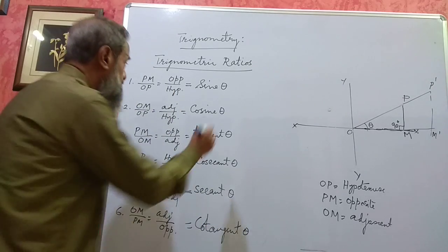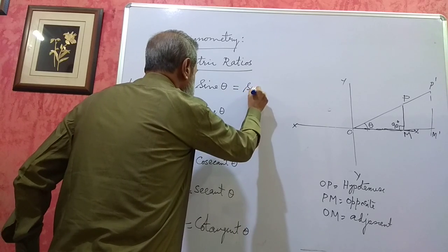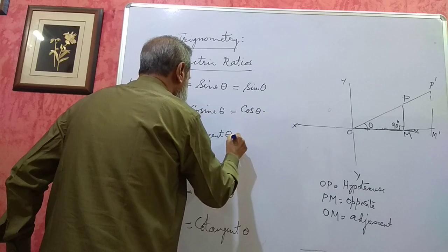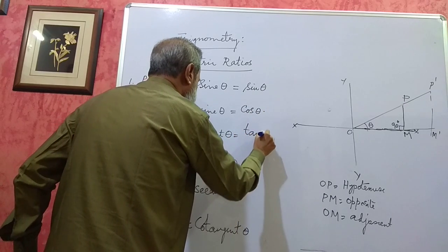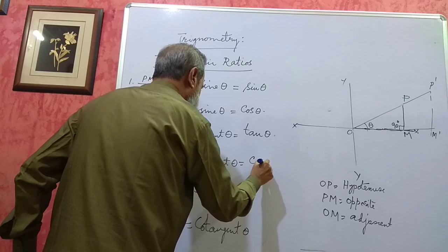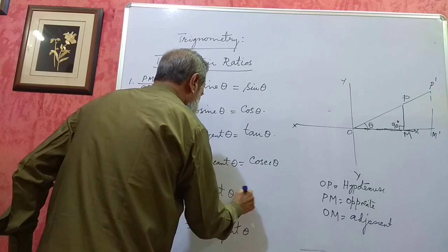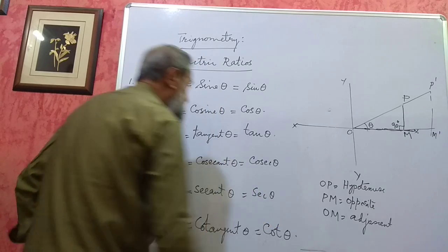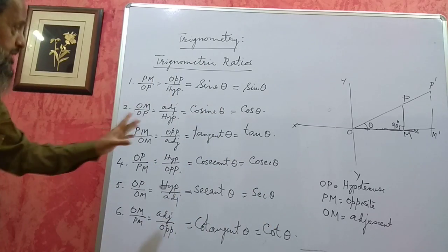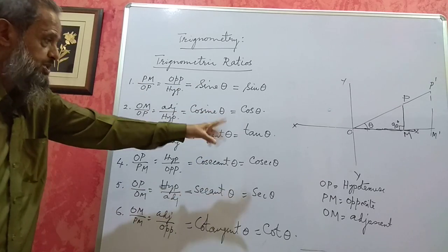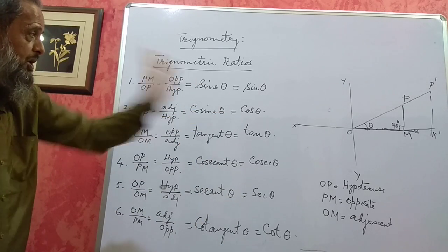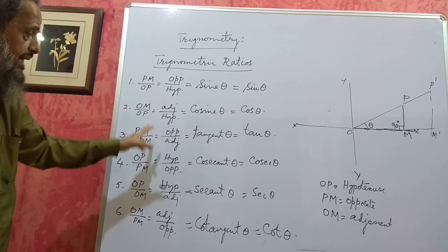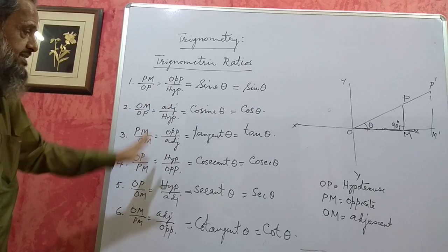These six ratios are shortly written as sin theta, cos theta, tan theta, cosec theta, sec theta, and cot theta. There are only six ratios because you cannot make a seventh ratio — you have only three sides in a right-angled triangle, and with those three sides you can only make these six ratios.